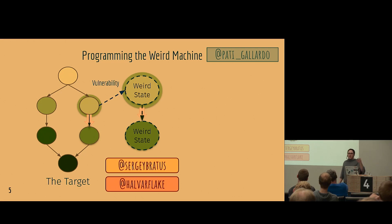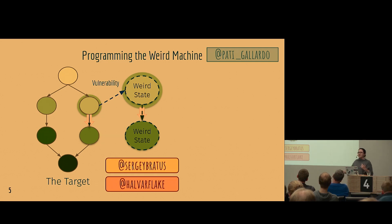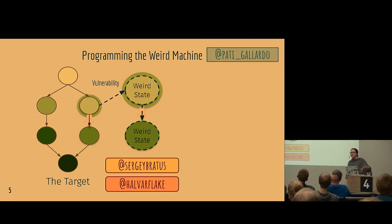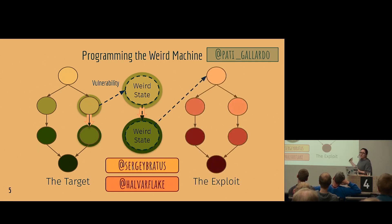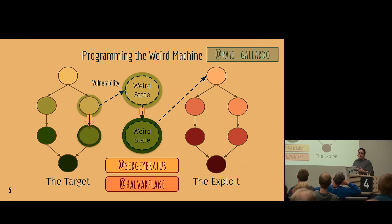To make transitions from one weird state to another you have to exploit the transitions in the program itself. For example, when the program uses a pointer to a deleted object — if you can control the memory that pointer points to when it's dereferenced, that is a transition in the normal program that you are using in your weird state machine. You can take this all the way to executing shellcode.